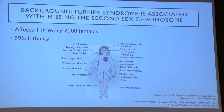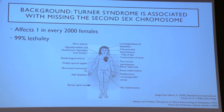These women who have Turner Syndrome, instead of being 46XX like a normal woman, or 46XY like a male, they're actually 45X. It affects about one in every 2,000 women. It's 99% lethality, which means that 99% of fetuses that have Turner Syndrome don't make it full term.